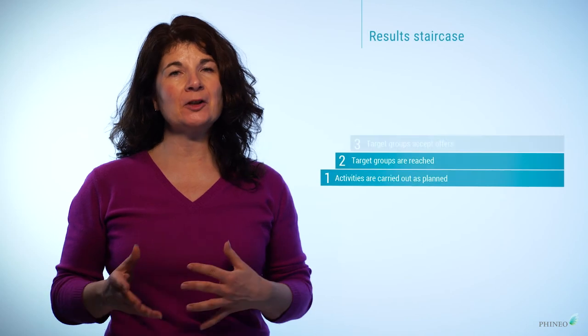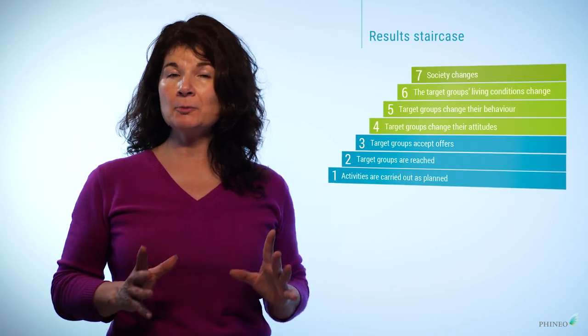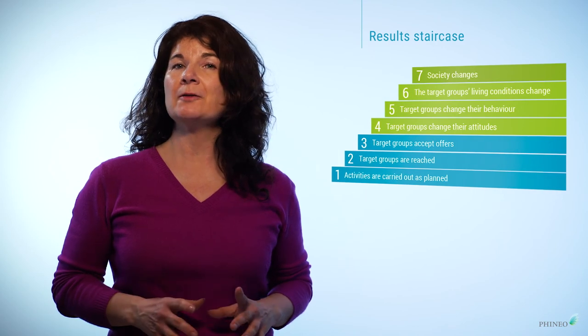At each stage in planning, you need to determine what needs to be done and what needs to take place in order to achieve your results. For example, if you want to reduce youth unemployment, you need to first ask what needs to happen. Youth need more jobs. But in order for that to happen, they need to be able to submit better, high-quality applications. You repeat this for each step in the results staircase. And when you're done, you'll have a very clear idea of what your project needs to do to achieve its objectives.